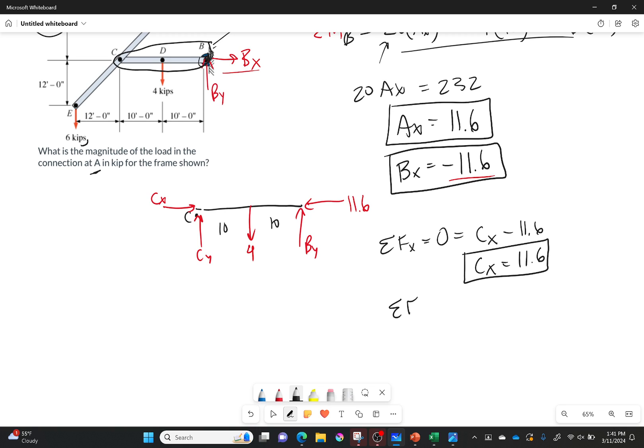Now let's do sum of the forces in the Y direction. Equals 0. So let's do things going up first. I've got Cy and By. So Cy plus By. I've got 4 going down. So minus 4. Can't solve that one yet. So let's leave it alone.